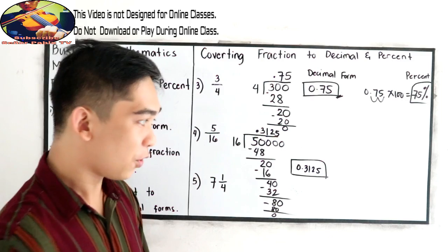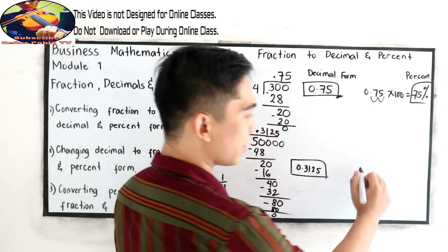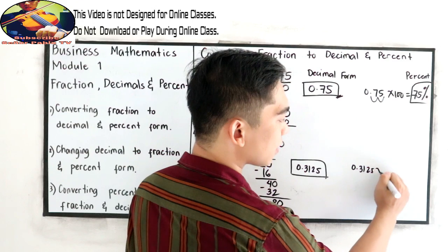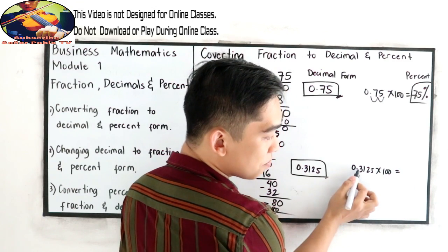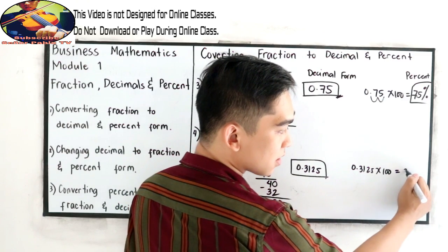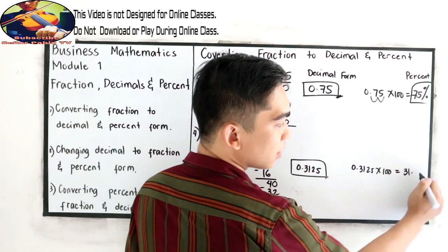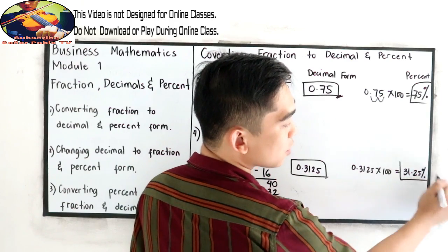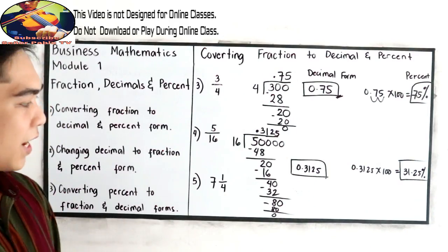To write into percent form: 0.3125 times 100 — move the decimal point to the right — gives 31.25%. This will be our percent form.